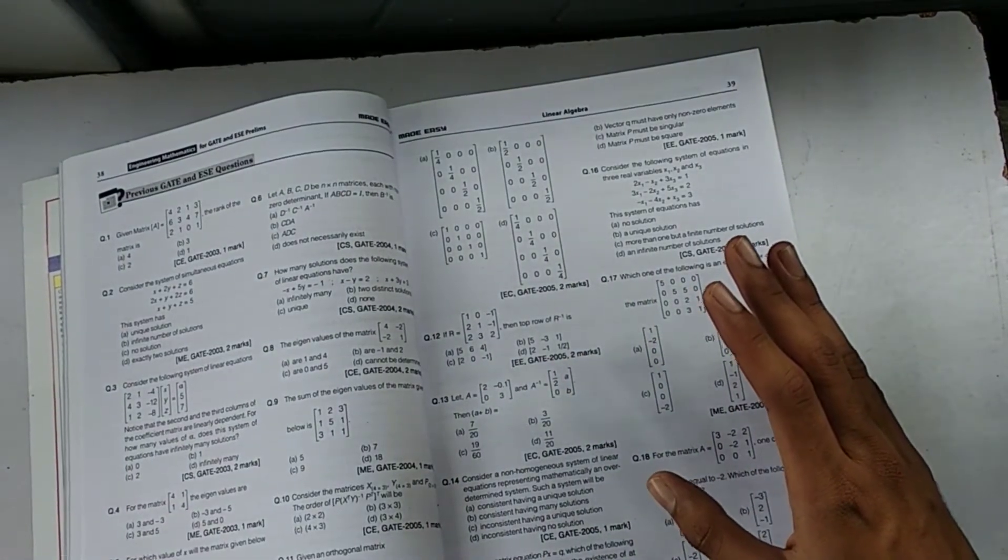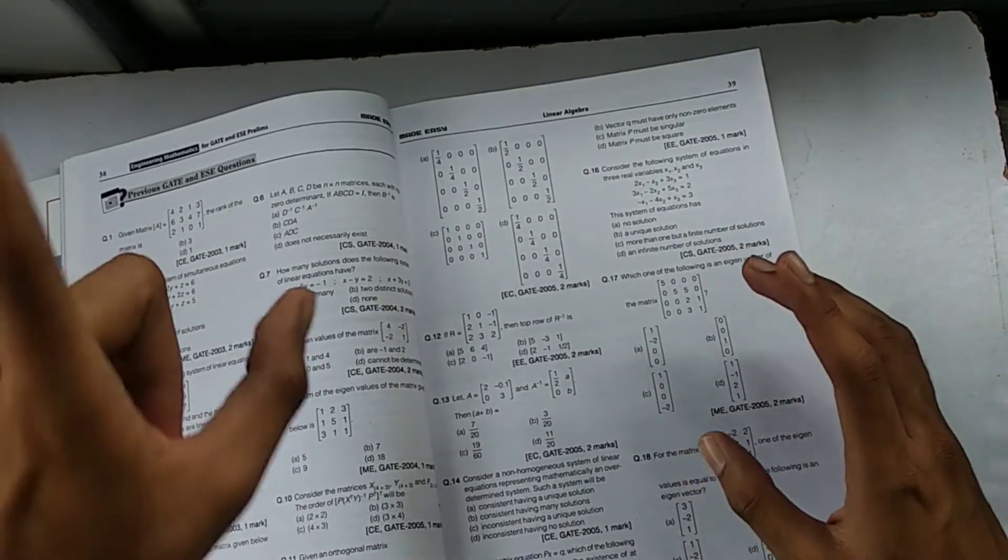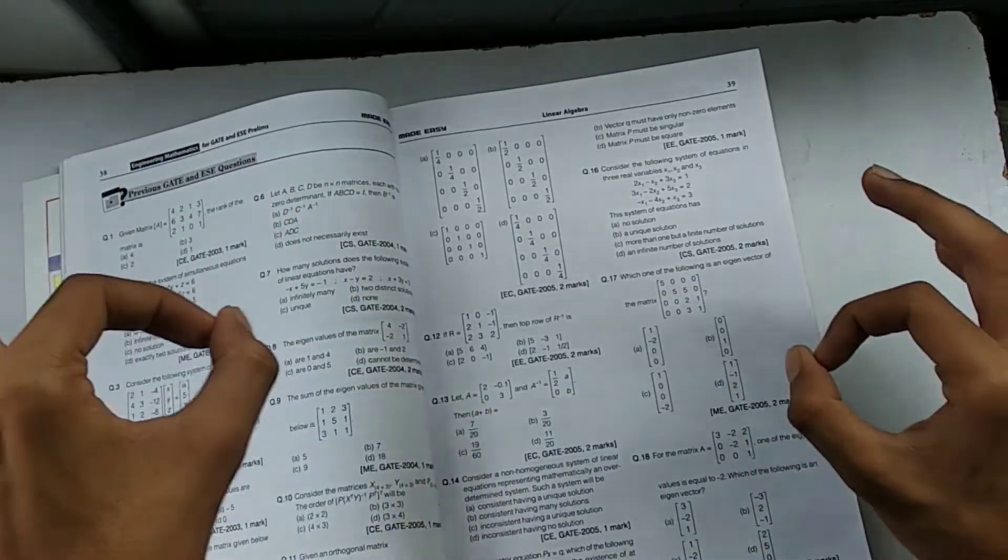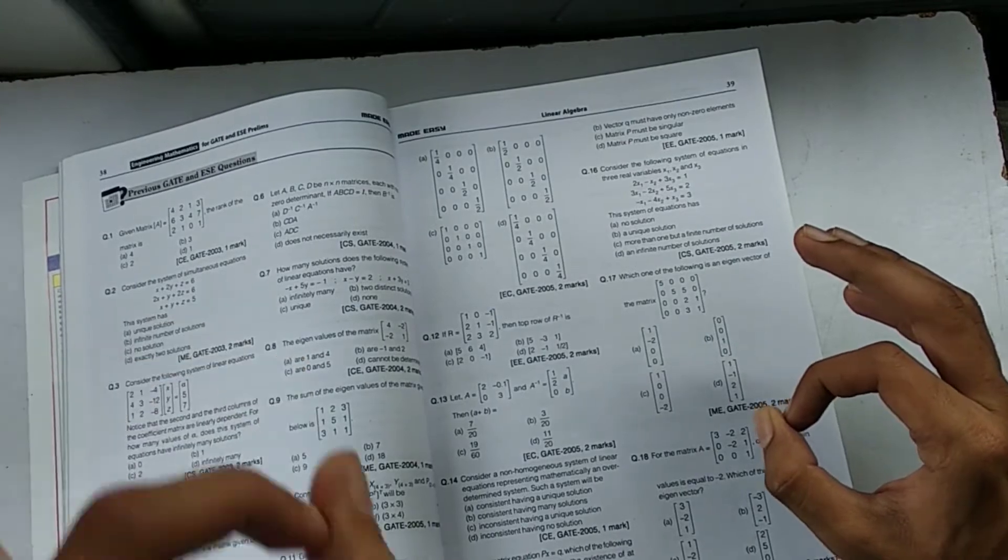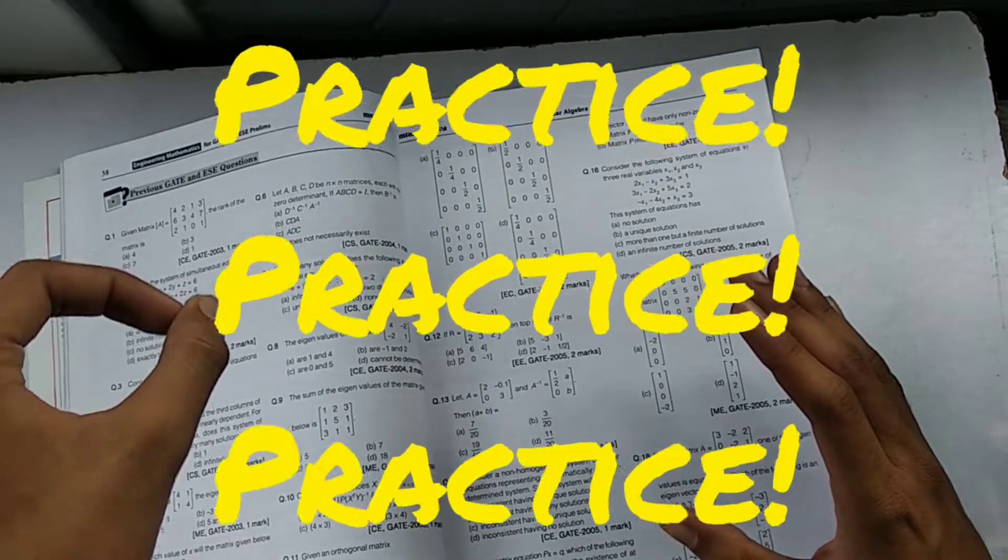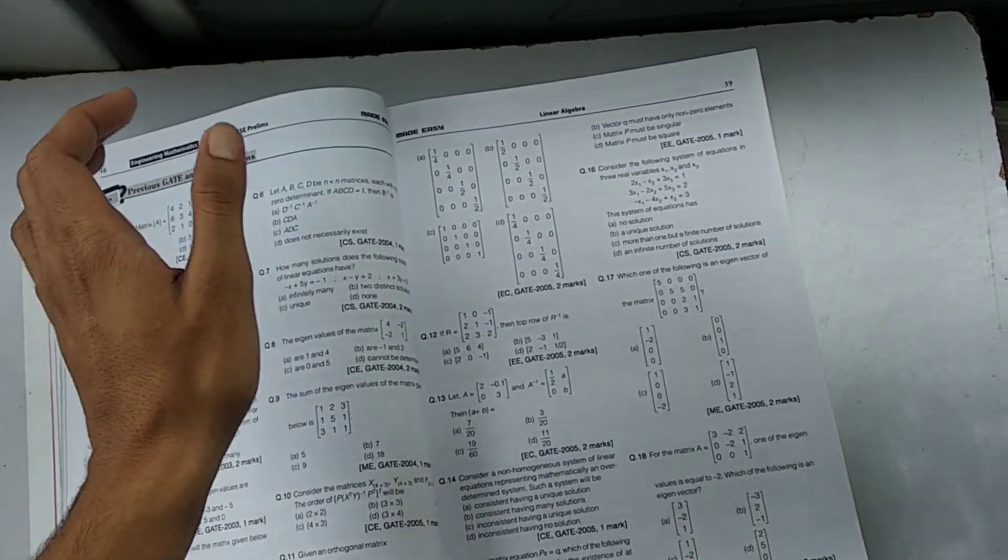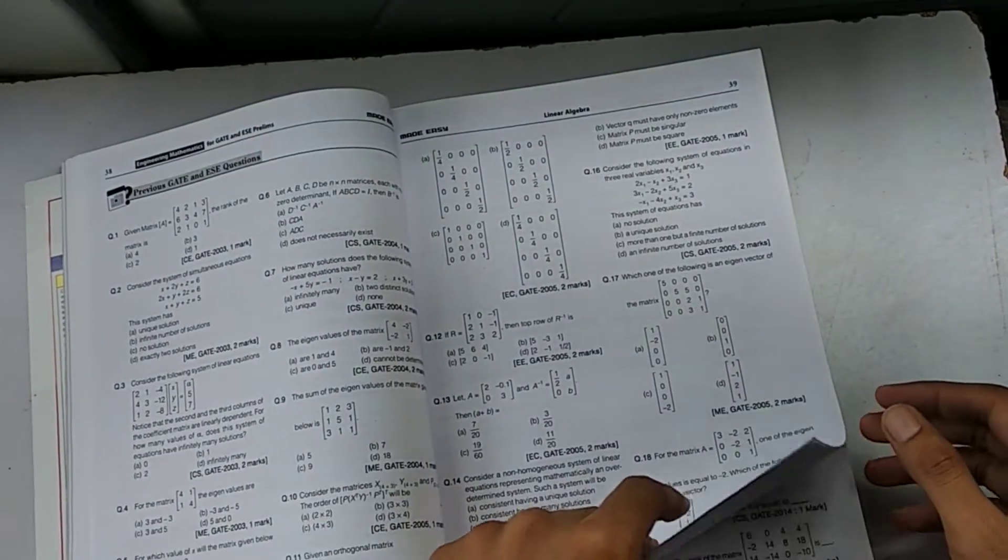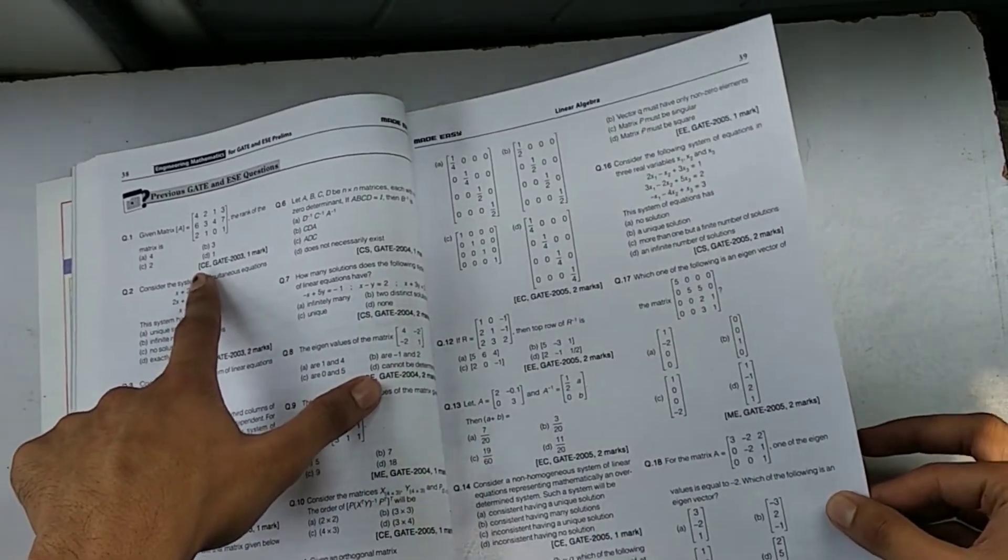If you want to score in Engineering Mathematics, all you need to do is first clear your concepts, then start practicing. You have to revise by practice, practice, and practice. Just by practice you can score. It comes for 13 marks, so there is probability that you can score 13 marks easily here. It's not like your core subjects.